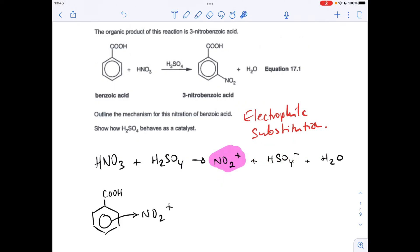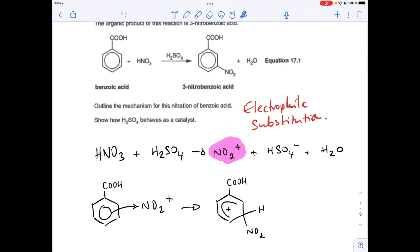So we show that by drawing a curly arrow from the pi electron cloud, the delocalised ring of electrons, to the electrophile, and that's going to create the intermediate, which looks like that.